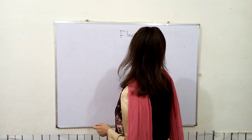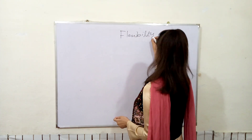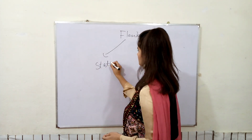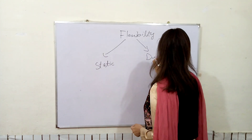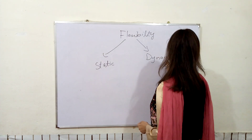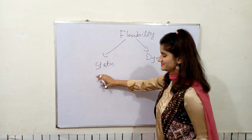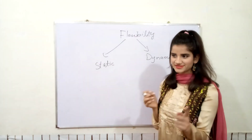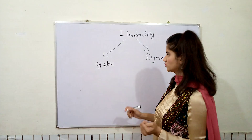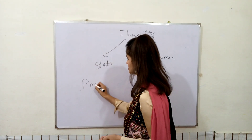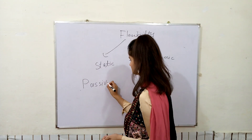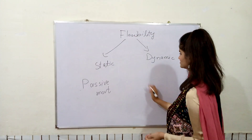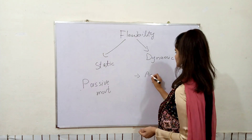There are two types of joint flexibility. One is static and the other one is dynamic. The basic difference between both of them is that static flexibility is due to passive movement, while dynamic flexibility is due to active movement.